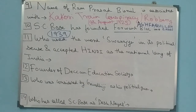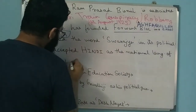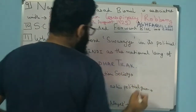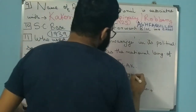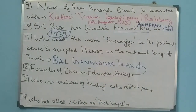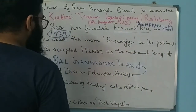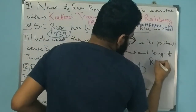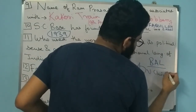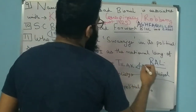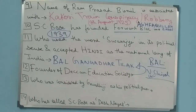Question 11: Who used the word 'Swarajya' in its political sense and accepted Hindi as the national language of India? This was done by Bal Gangadhar Tilak, who is an extremist leader. The answer for 'founder of Deccan Education Society' is also Bal Gangadhar Tilak. Valentine Chirol called Bal Gangadhar Tilak the 'Father of Indian Unrest' - this question has been discussed in previous modern history videos.